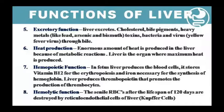Next is the hemopoietic function. In the fetus, the liver produces blood cells. Hemopoietic means blood formation — specifically erythrocyte or RBC formation. Fetal liver produces blood cells. Vitamin B12 is stored in the liver, and iron is necessary for hemoglobin. The liver also produces lymphopoietin.